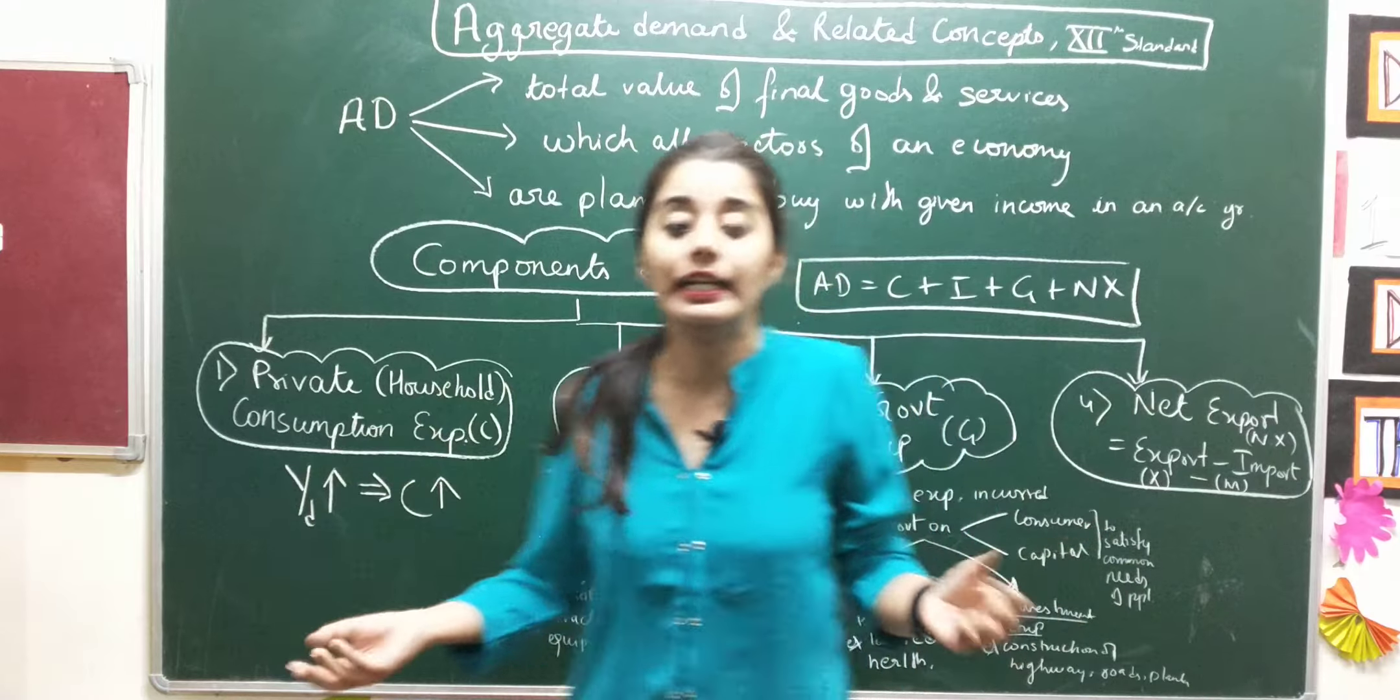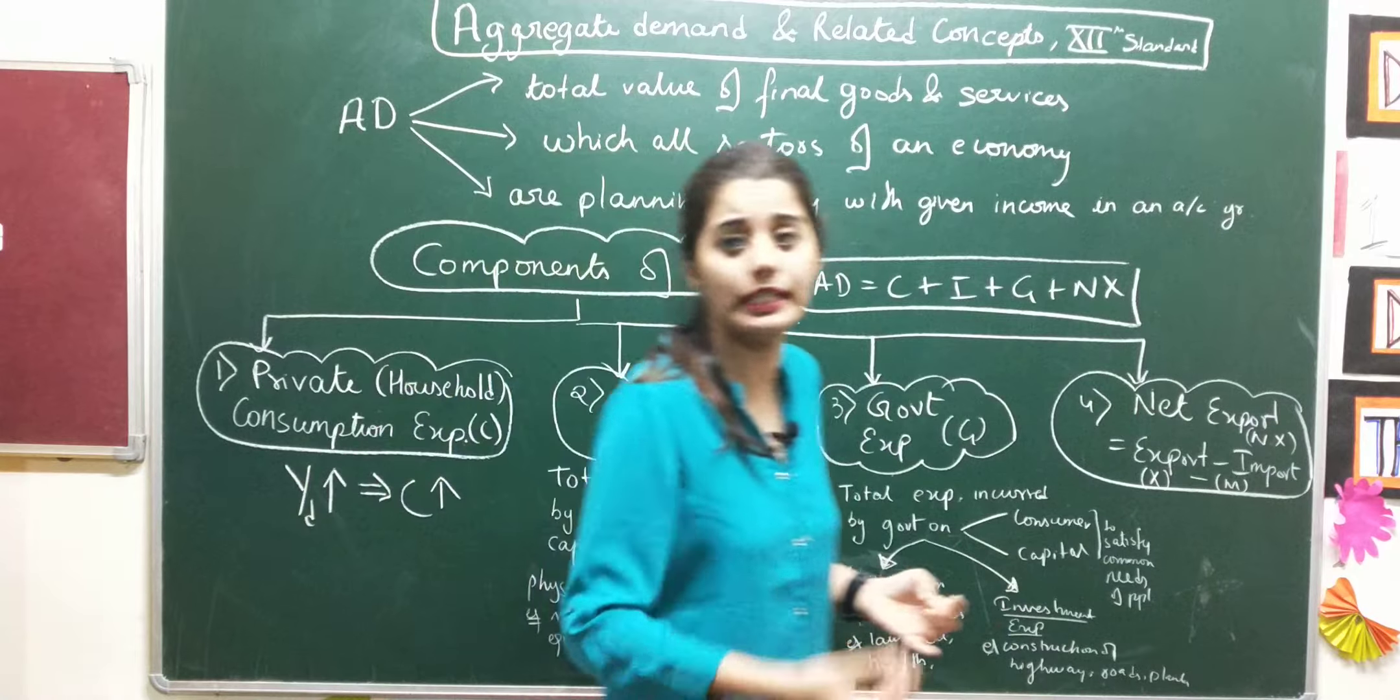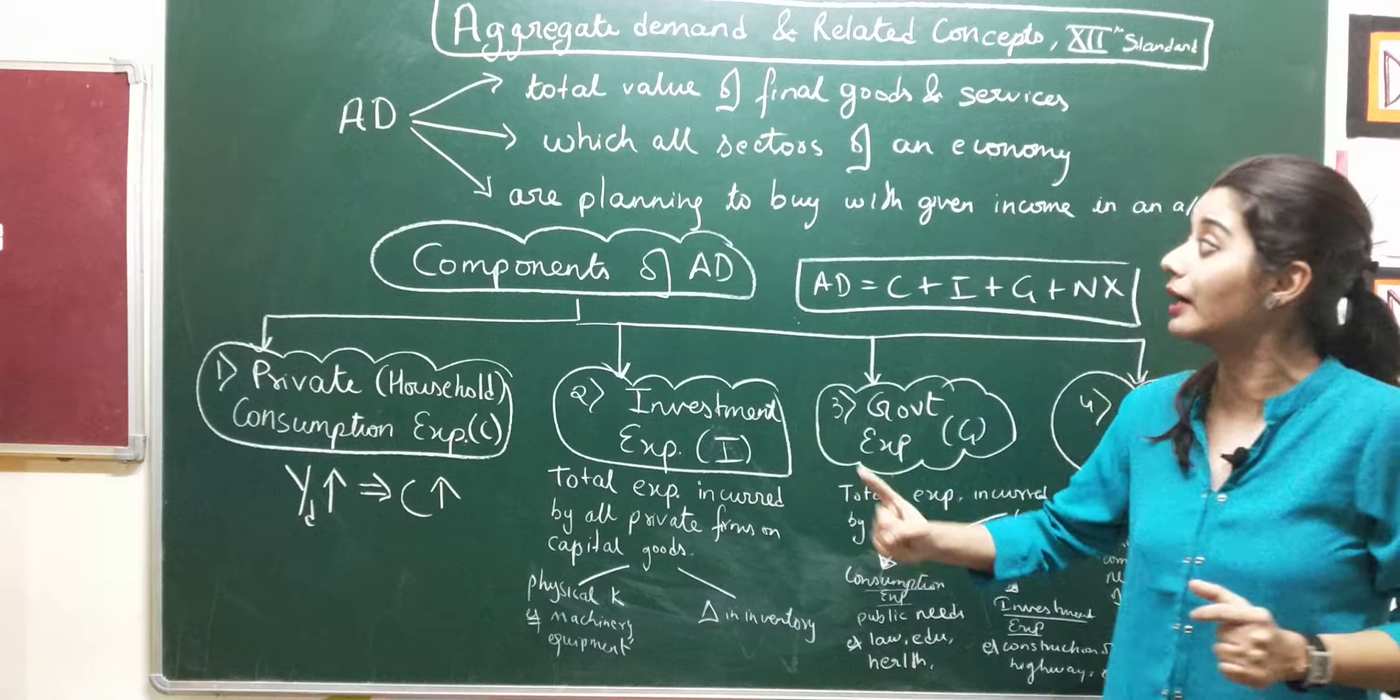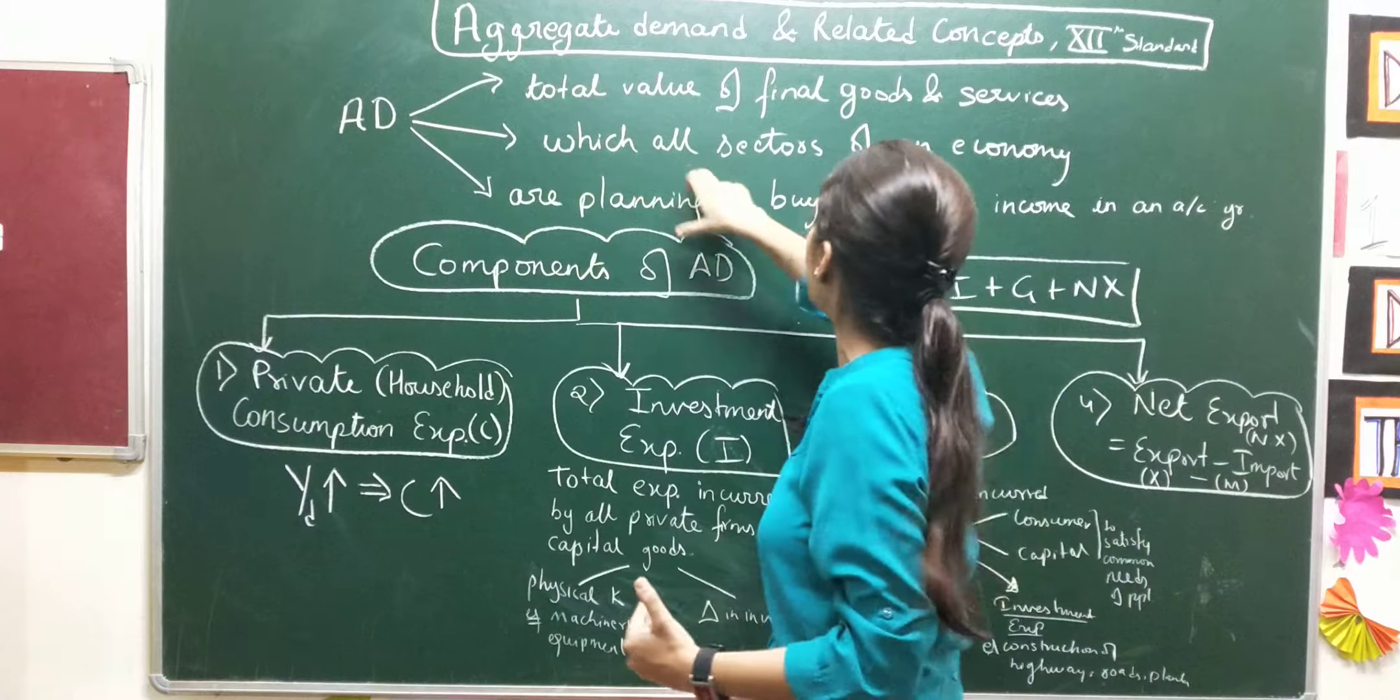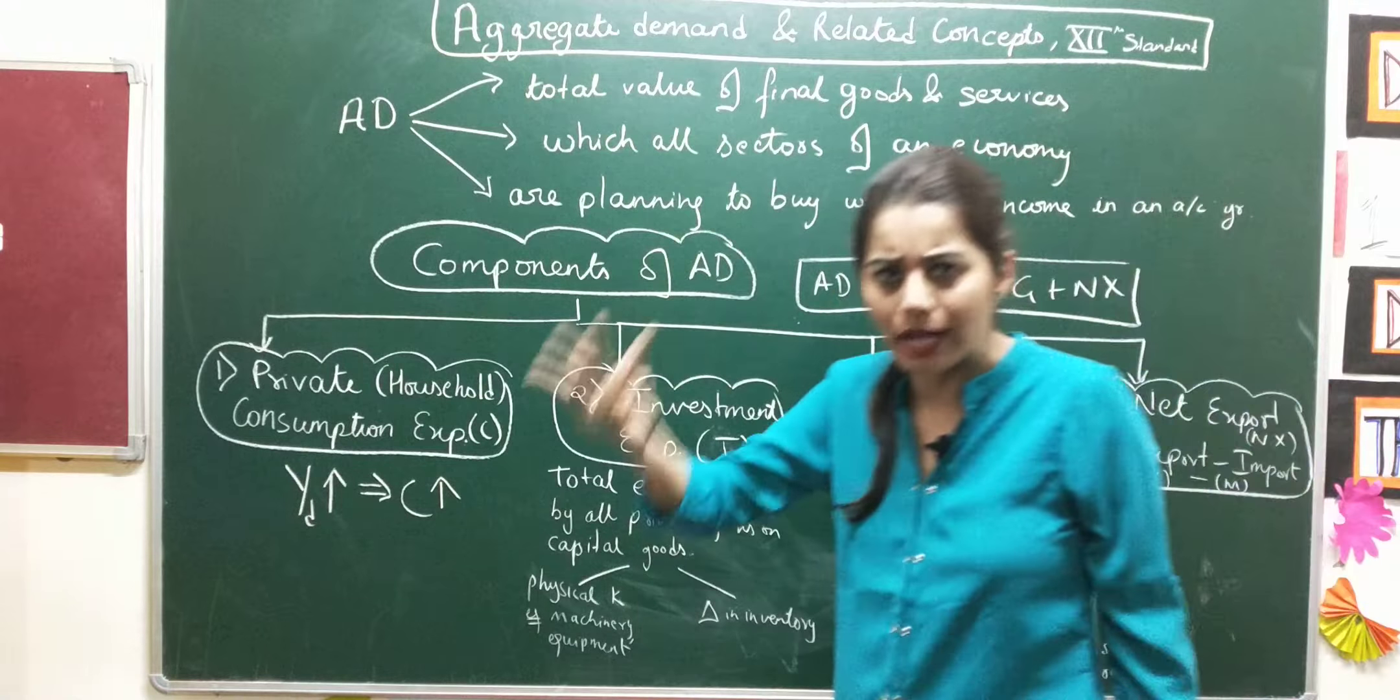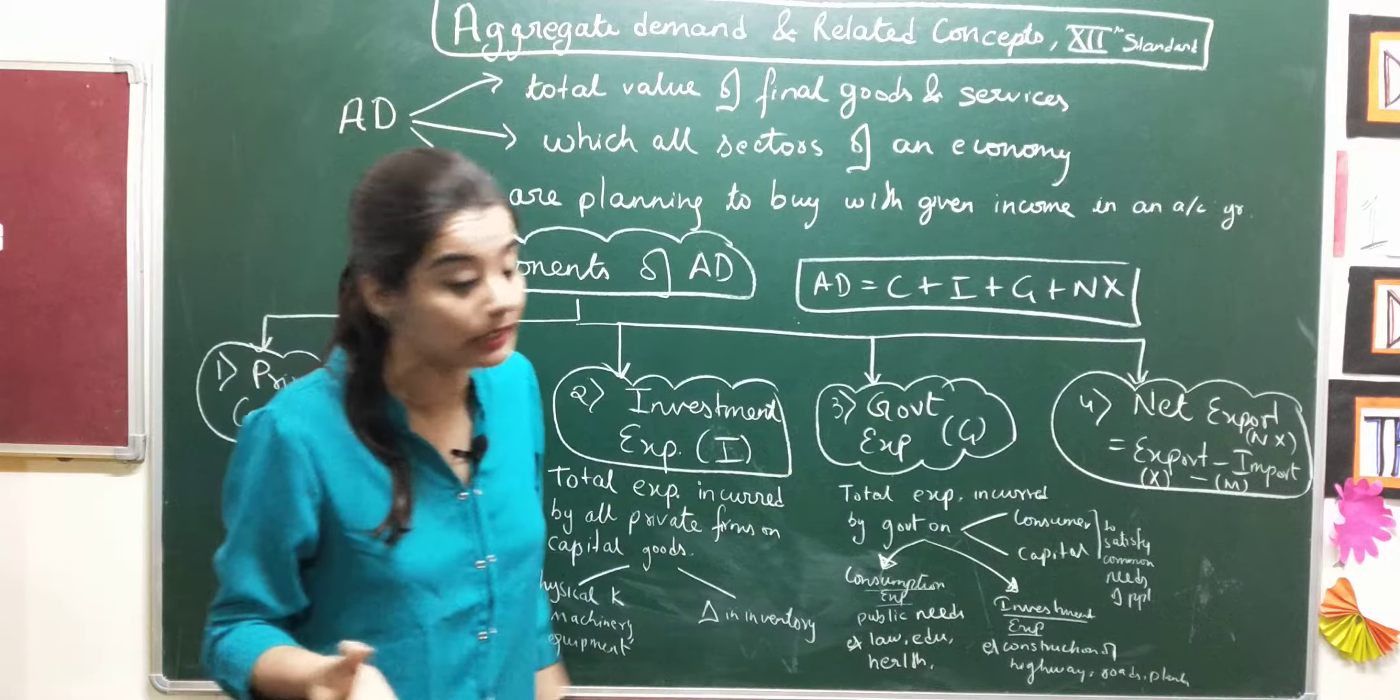And those goods can be anything - in one year, how many clothes, shoes, overall all the things in one year. And who demands it? All the three sectors: your primary sector, secondary sector, and tertiary sector.